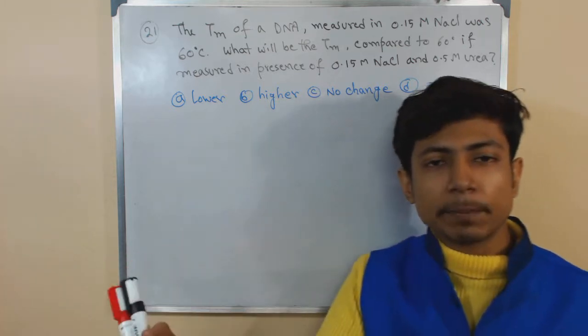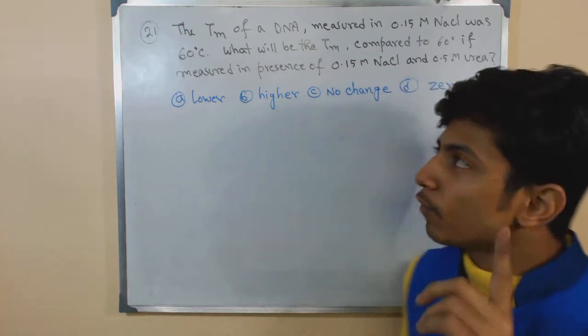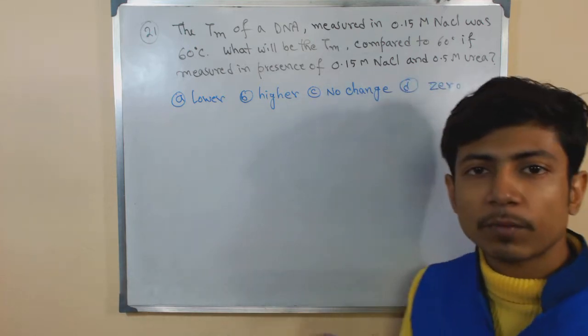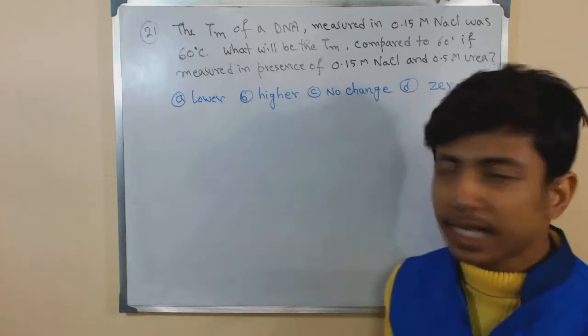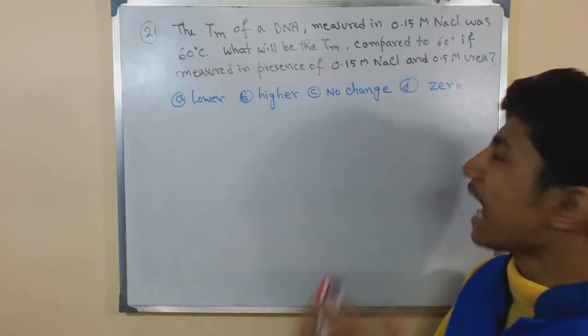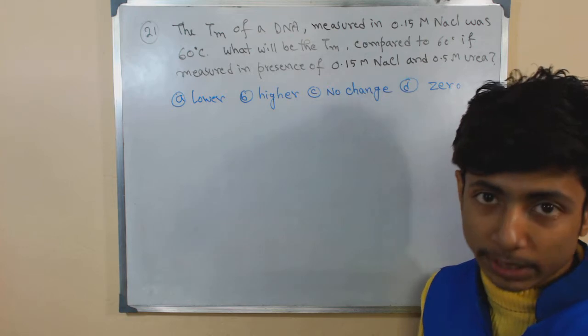They measure the melting temperature or Tm of the DNA first time in the presence of only 0.15 molar NaCl and the second time in presence of 0.15 molar NaCl and 0.5 molar Urea.